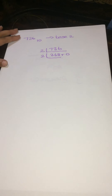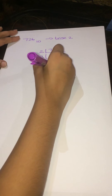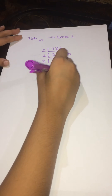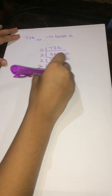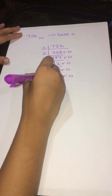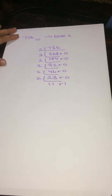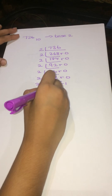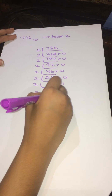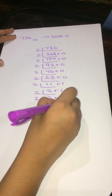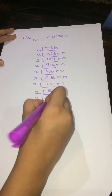Then 368 divided by 2 will give you 184 remainder 0. Then 184 divided by 2 will give you 92 remainder 0. Then 92 divided by 2 will give you 46 remainder 0. Then 46 divided by 2 will give you 23 remainder 0. Then 23 divided by 2 will give you 11 remainder 1. Then 11 divided by 2 will give you 5 remainder 1. Then 5 divided by 2 will give you 2 remainder 1. And then 2 divided by 2 will give you 1 remainder 0. And then 1 divided by 2 will give you 2 remainder 1.